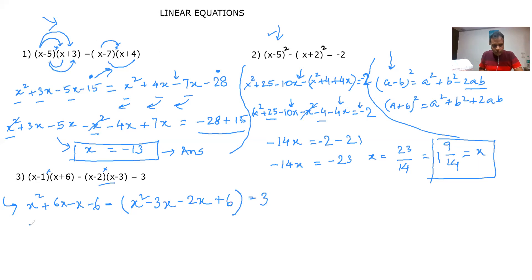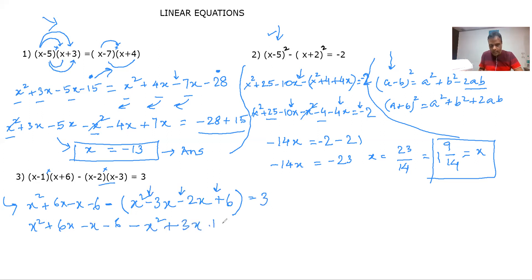Let's open the bracket. We get x² + 6x − 6. Now with the minus sign in front of the bracket, all the signs inside will change. So we get −x², +3x, +2x, and −6 becomes +6. Combining: x² + 6x − 6 − x² + 3x + 2x + 6 = 3. The rule is the same: keep all variables on the left and bring all numbers to the right. x² and x² cancel.